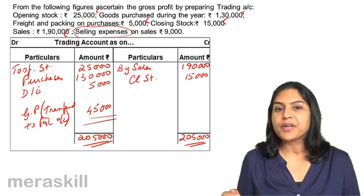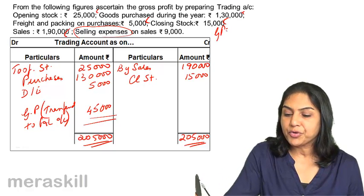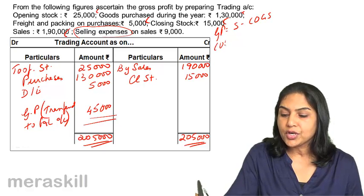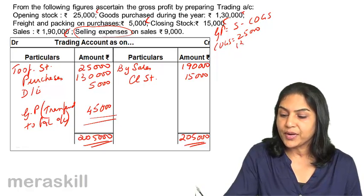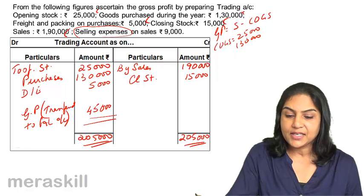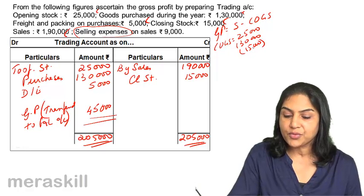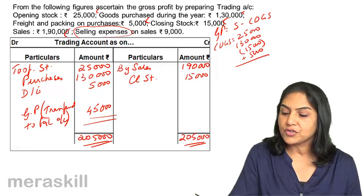If we take it in the equation format, where gross profit equals sales minus cost of goods sold — cost of goods sold is opening stock of 25,000 plus goods purchased of 1,30,000 less closing stock of 15,000, plus direct cost of 5,000. This is our cost of goods sold.